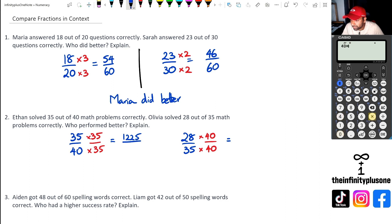Now, 40 times 35, that's going to give me 1400, which means I'm also getting 1400 in the denominator here. Then I've got 28 times 40. So 28 times 40, and that's going to give me 1120. So if you look at it, the bigger number is 1225. So we can actually say Ethan actually did better. So we're just going to write a little statement. Ethan performed better.